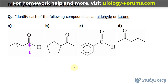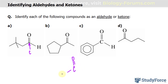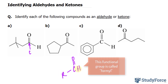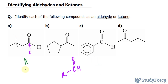Now all aldehydes have this structure. They have a carbon double bonded to an oxygen, then you have the rest of the molecule represented by R, and this carbon is bonded to a hydrogen. As you can see, this molecule has that configuration. So this is an aldehyde.